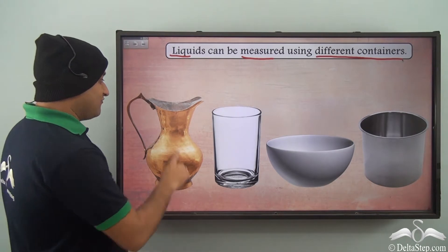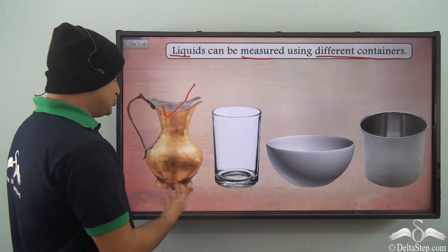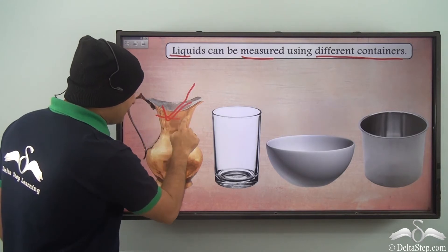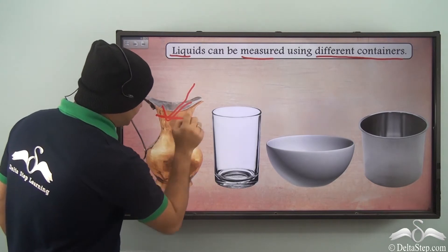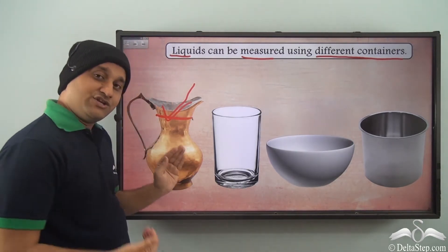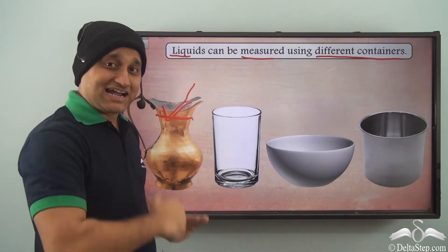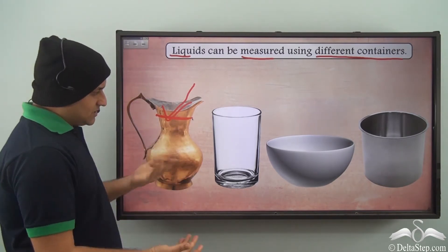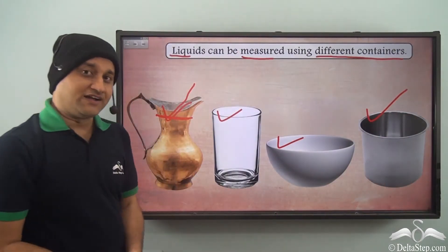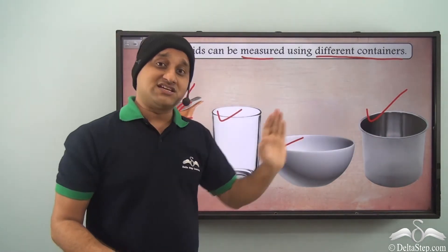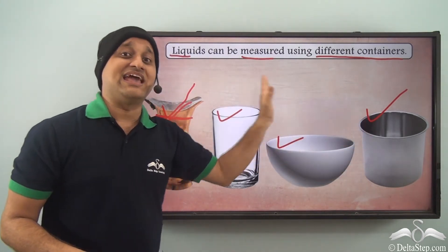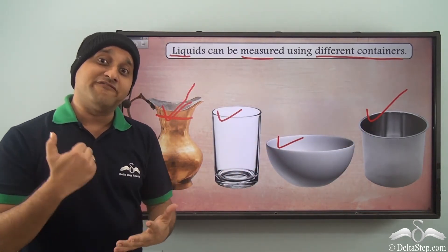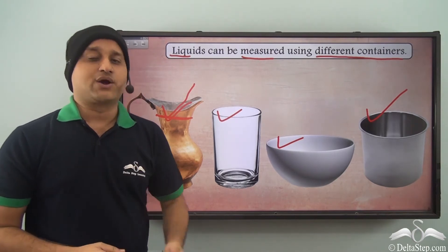If you have a particular container at home and you require a certain amount of liquid — say up to a certain level — you can ask the milkman to fill the milk till there. That way you know you are purchasing exactly the amount of liquid you need. Similarly, you can use a glass, a bowl, or even a different type of container, giving you a fixed amount of liquid.